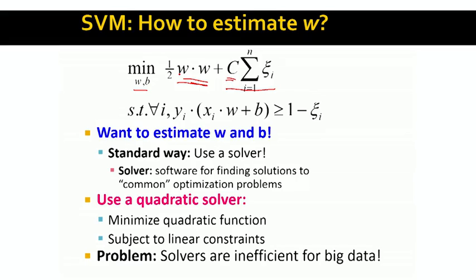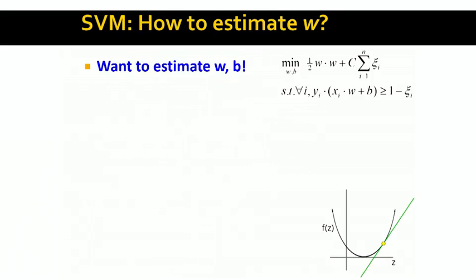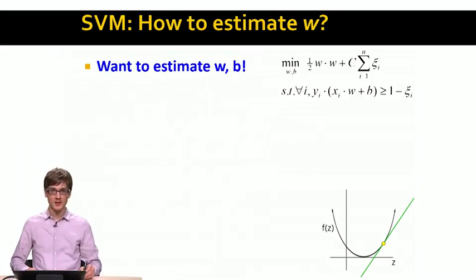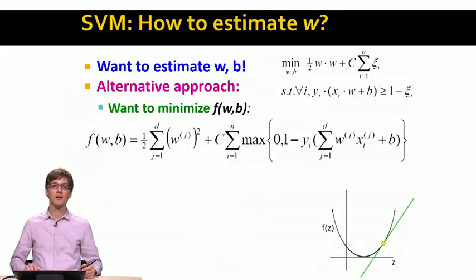Given that this is a support vector machine, we can use the structure of the problem to come up with a much better solution. Off-the-shelf solvers are very inefficient for large-scale data, and we have to build a custom solution that will optimize our SVM optimization problem. So the question is: how do we do that? Our goal is to estimate w and b, and we will come up with an alternative approach.